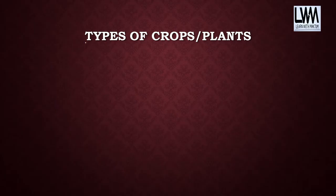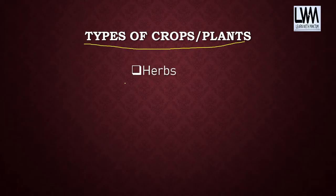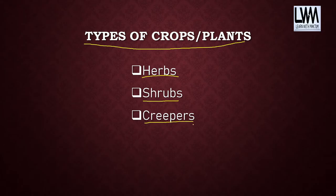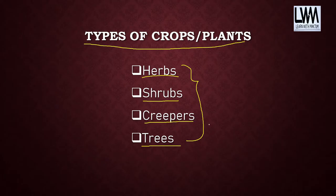First you have to understand the types of plants. There are different types: first one is herbs, then comes shrubs, then creepers, and then we have trees. So these are the different types of plants. Let us see them one by one.